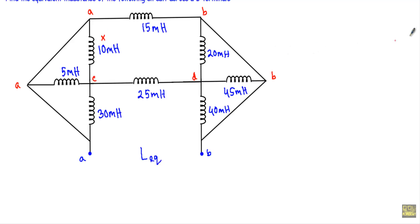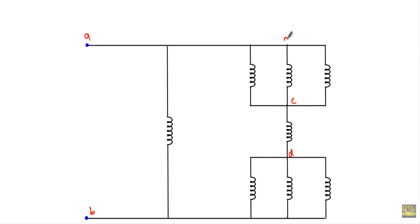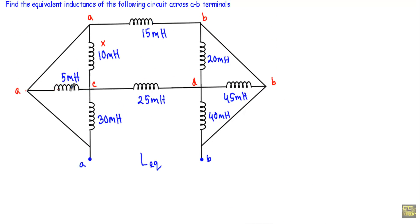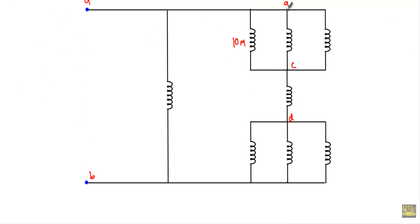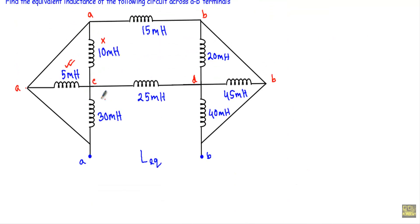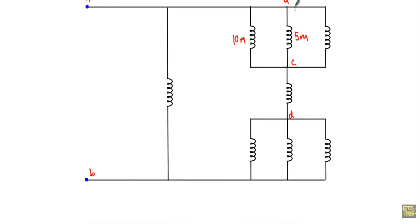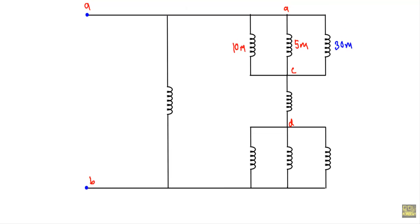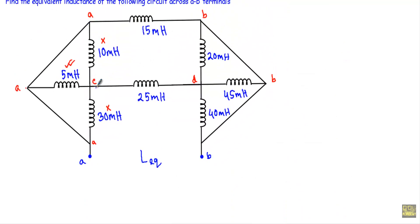If I want to go from A point to C point, I will first encounter this 10 mH inductor. Going from A terminal to C terminal, this will be a 10 mH inductor. After that, going from A to C, I will get this 5 mH inductor. And going from A to C point, I will also see this 30 mH inductor. So I have covered all the inductors between point A and point C.